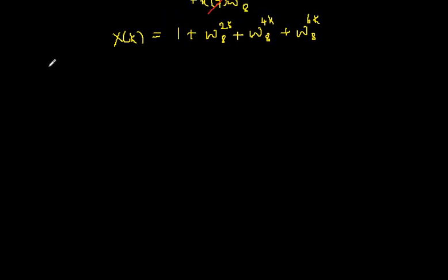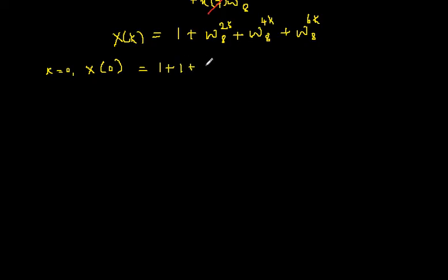Once I know this expression, I can find the samples very easily. I put k=0, so that I get X(0). Substituting k=0, everything becomes W8^0 = 1, so I get 1+1+1+1 = 4 as the answer. That is X(0) = 4.